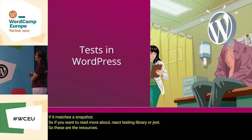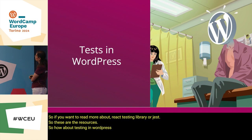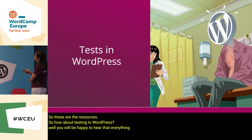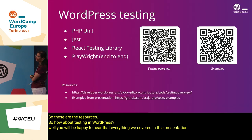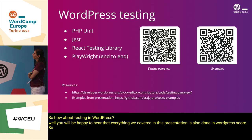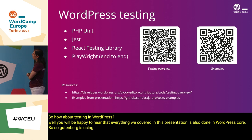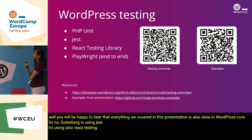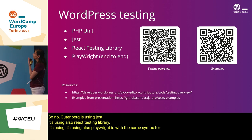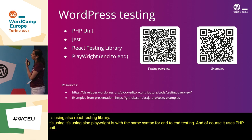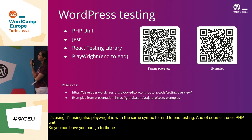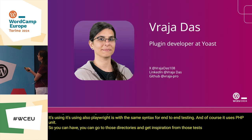How about testing in WordPress? You'll be happy to hear that everything covered in this presentation is also done in WordPress core. Gutenberg uses Jest, React Testing Library, and Playwright with the same syntax for end-to-end testing, and of course PHPUnit. You can go to those directories and get inspiration from those tests.